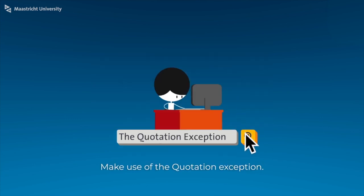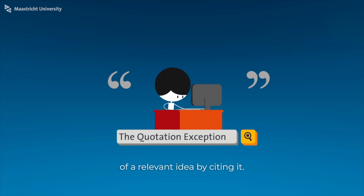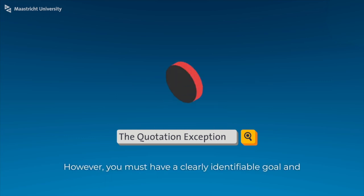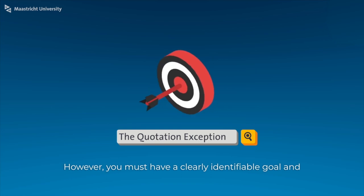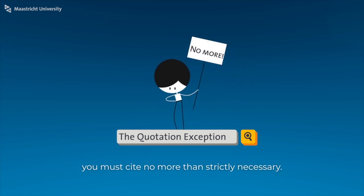Make use of the quotation exception. This means that you can make use of a relevant idea by citing it. However, you must have a clearly identifiable goal and you must cite no more than strictly necessary.